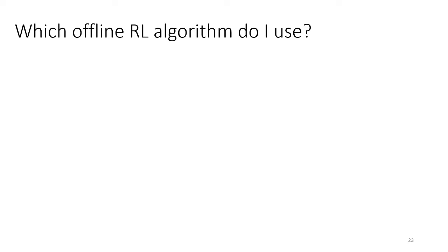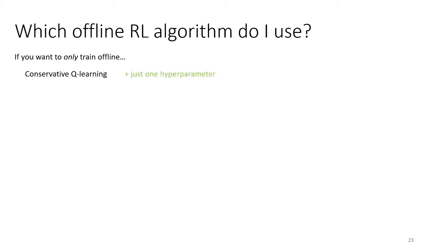Here is a rough back-of-the-envelope rule of thumb. If I were to approach some new offline RL problem, here is the decision tree I would use. If you want to train only offline, meaning you're not going to do online fine-tuning, conservative Q-learning is a good choice because it has just one hyperparameter and it's well understood and widely tested, and there has been extensive verification showing that it works decently well in pure offline mode.